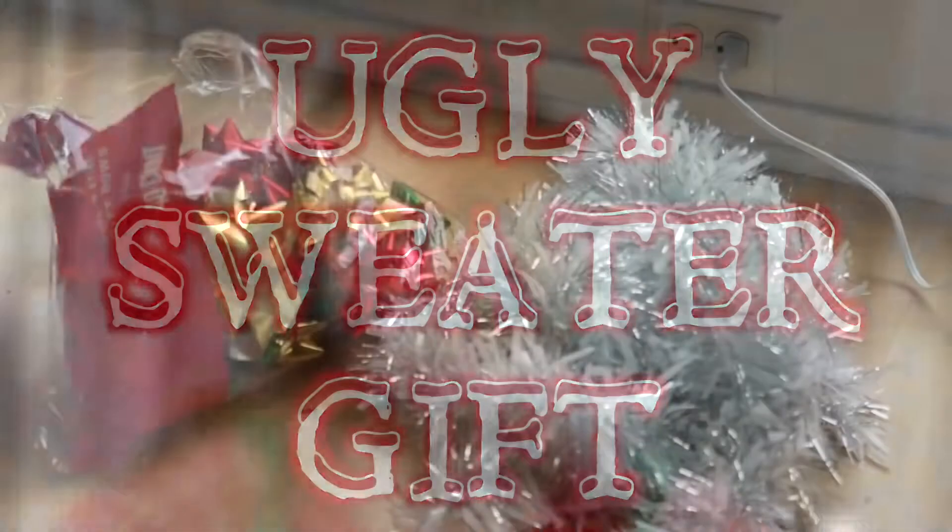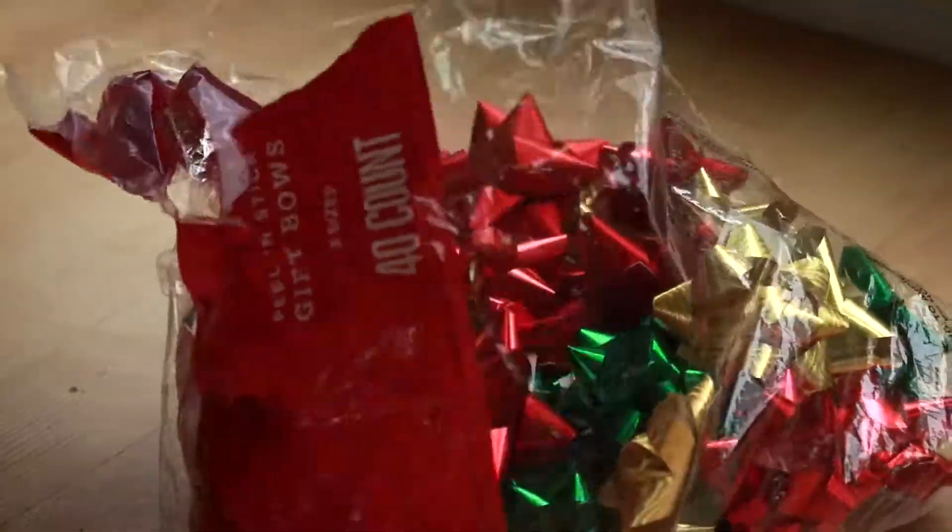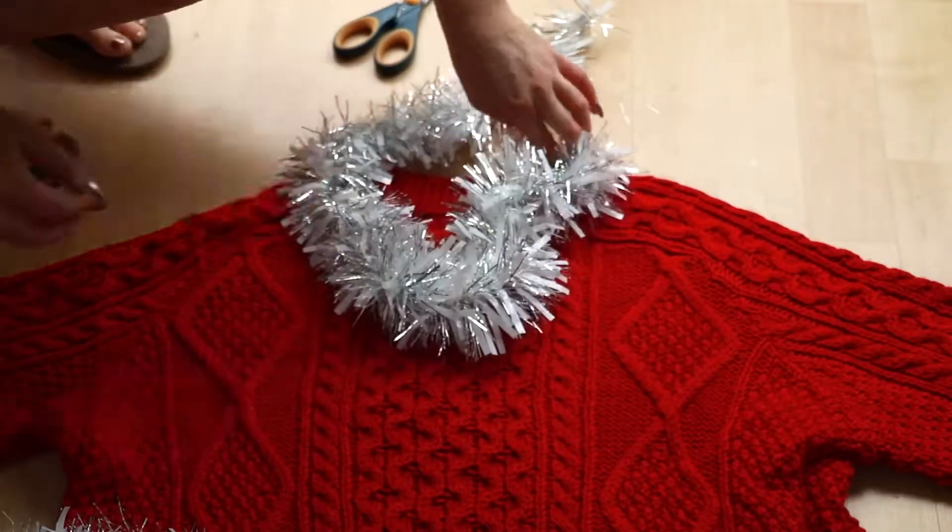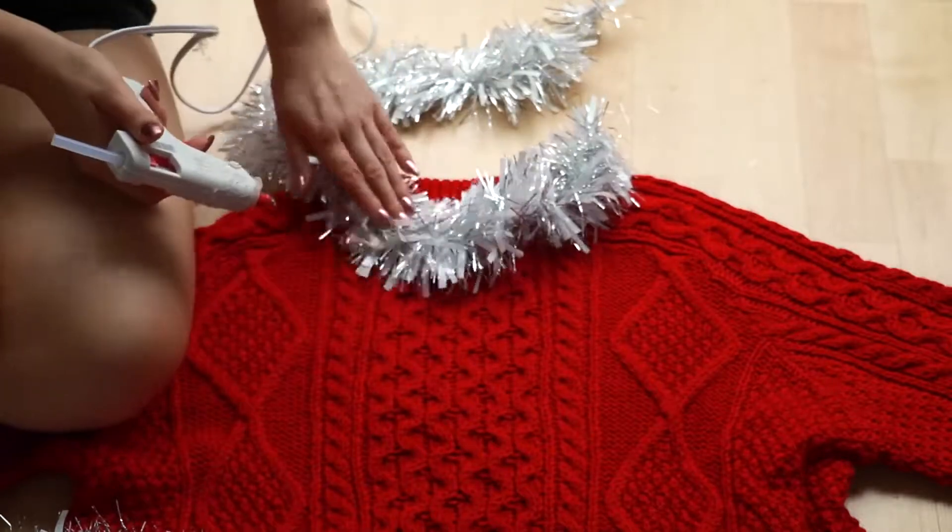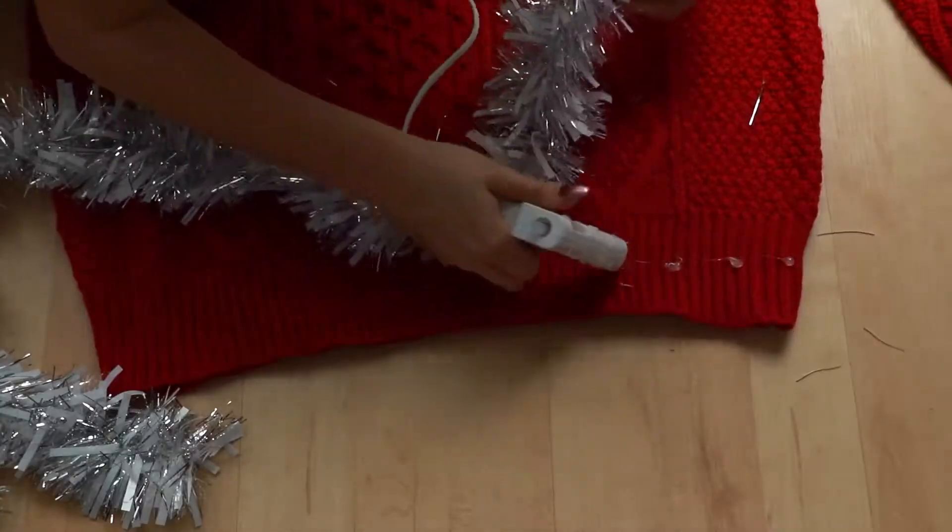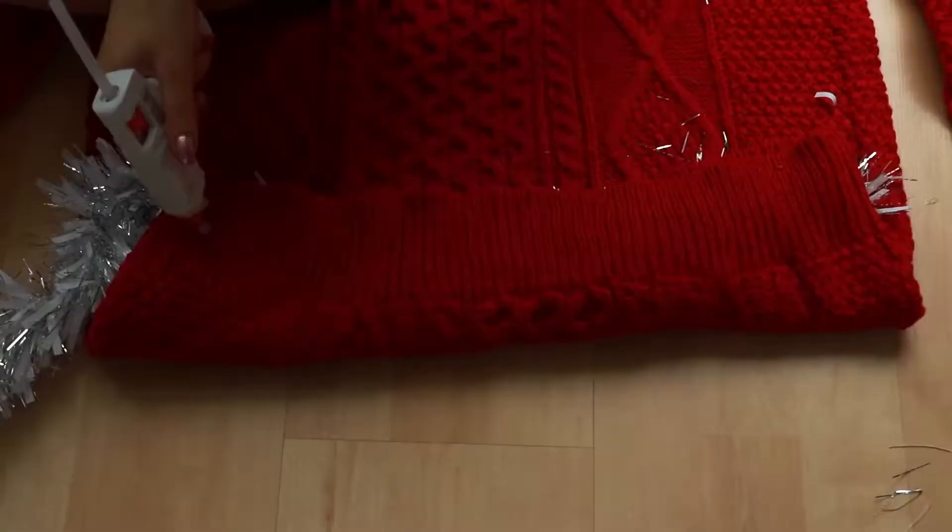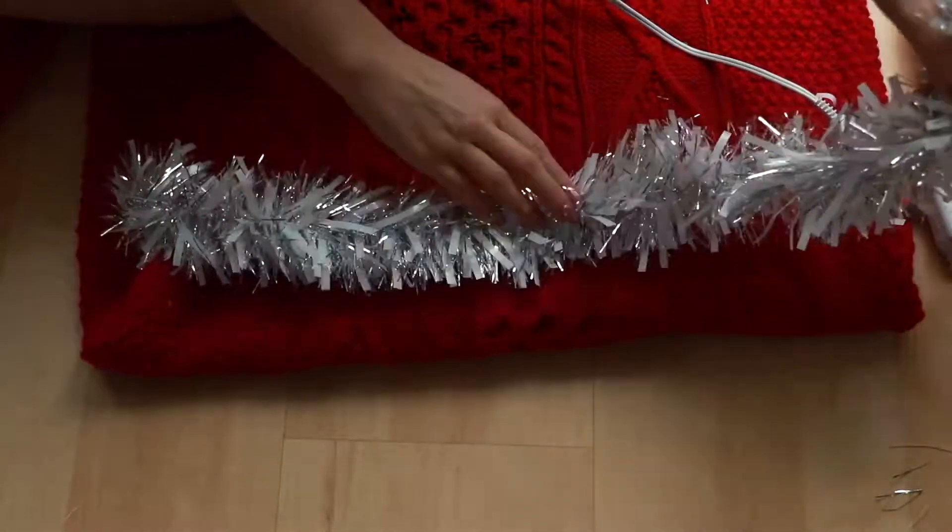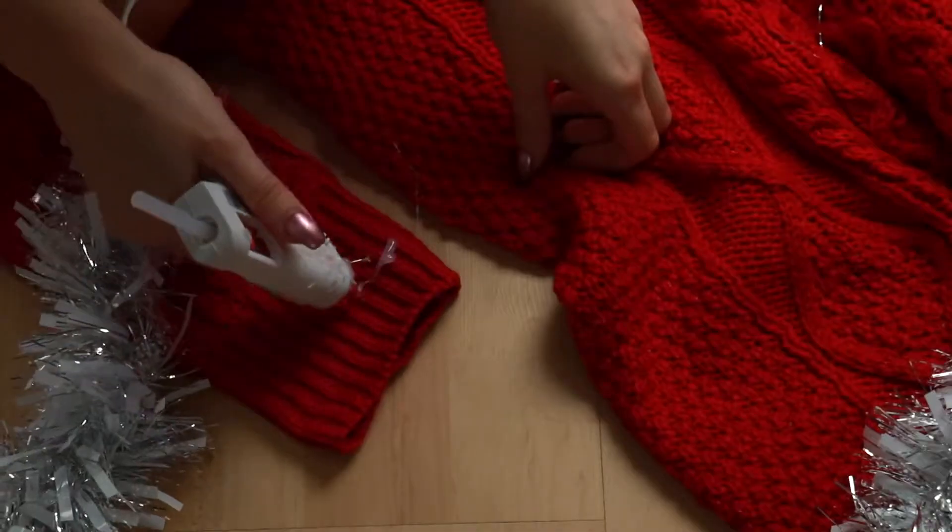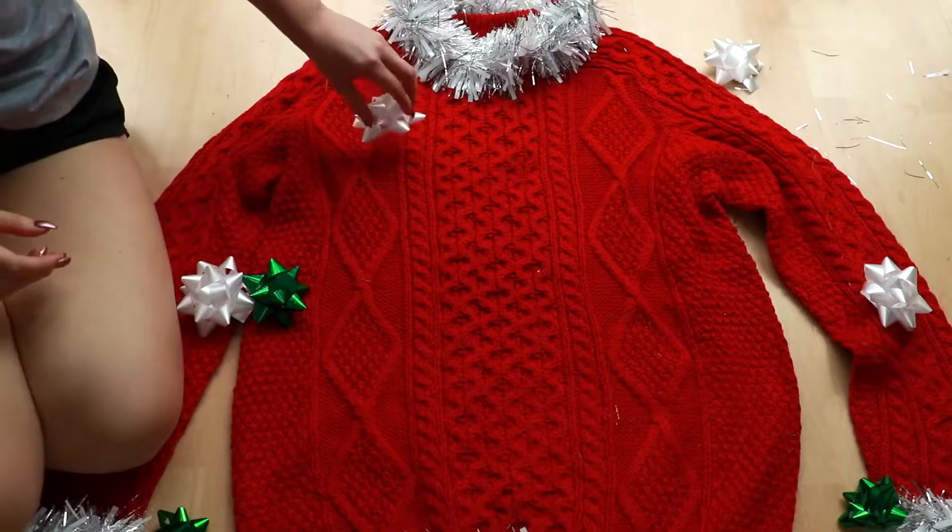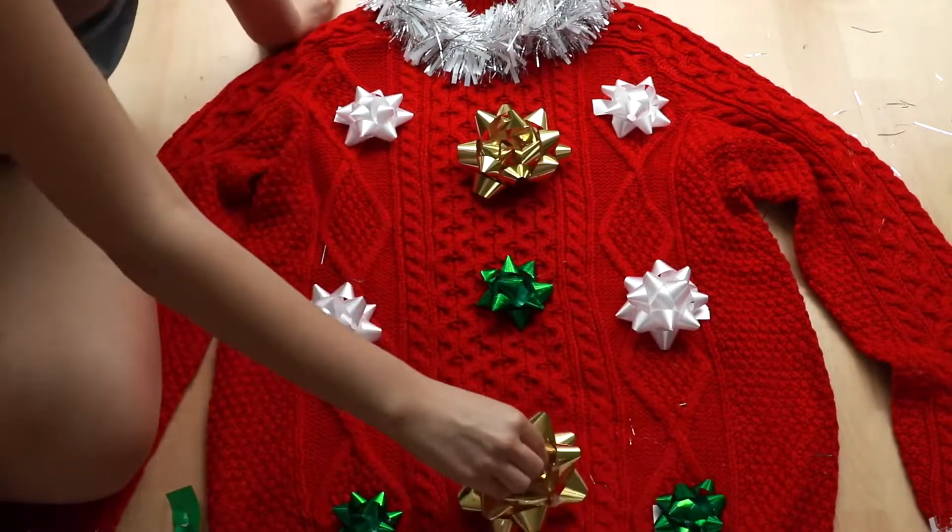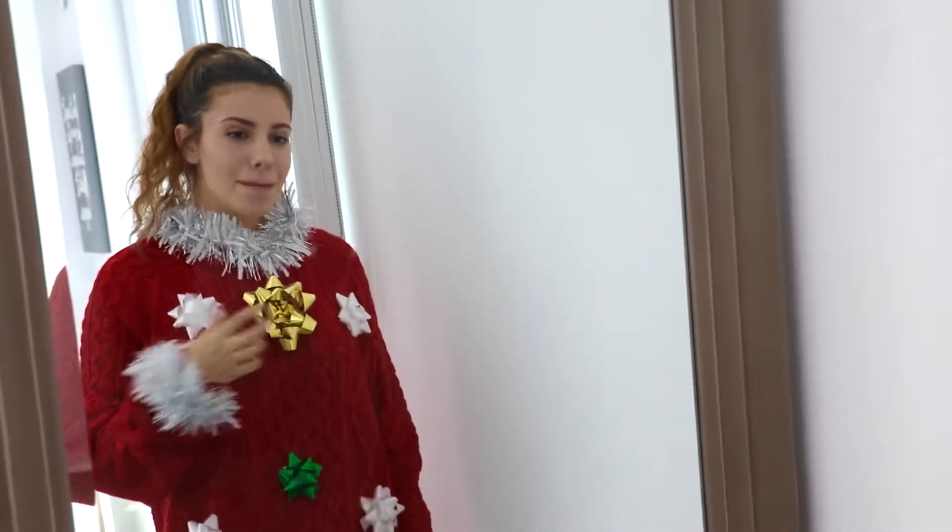Now onto the ugly sweater gift. So all you need is some bows, garland, anything that you have around the house that's Christmassy, and you're going to hot glue it to your sweater. I just chose some garland to hot glue on. And don't hot glue it around the neck because it'll end up being really itchy. But you can hot glue it around the wrist or the bottom and you'll be good with that. Just you don't want to be itching all night. And then to make it look more like a gift, I just stuck on some bows, and that is it. Okay, okay, I did a pretty good job here.